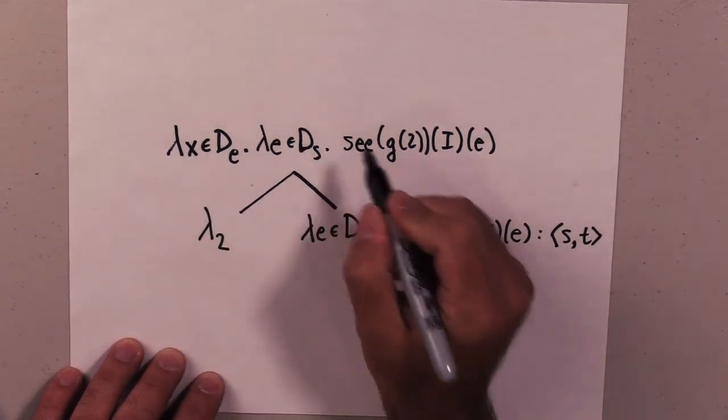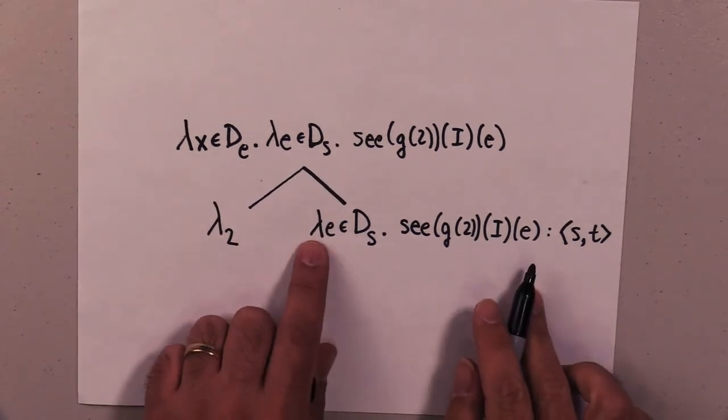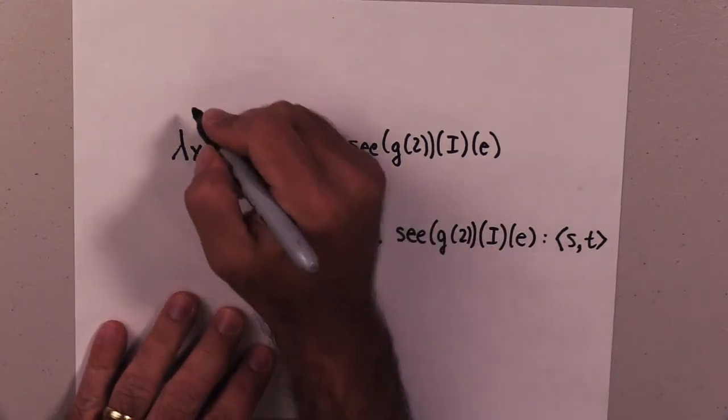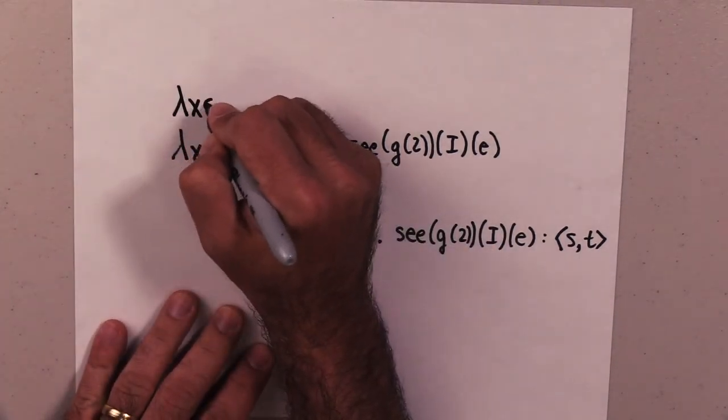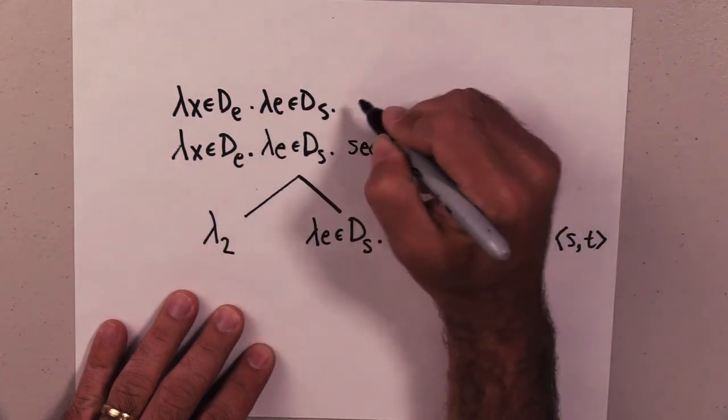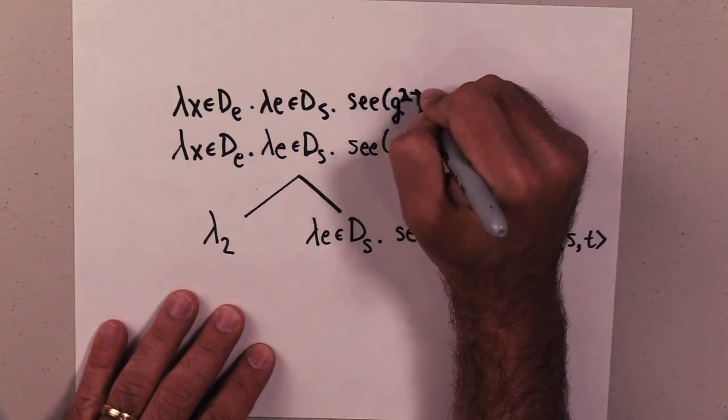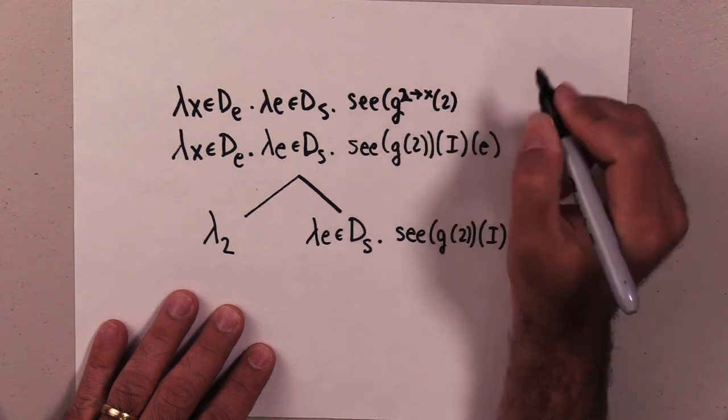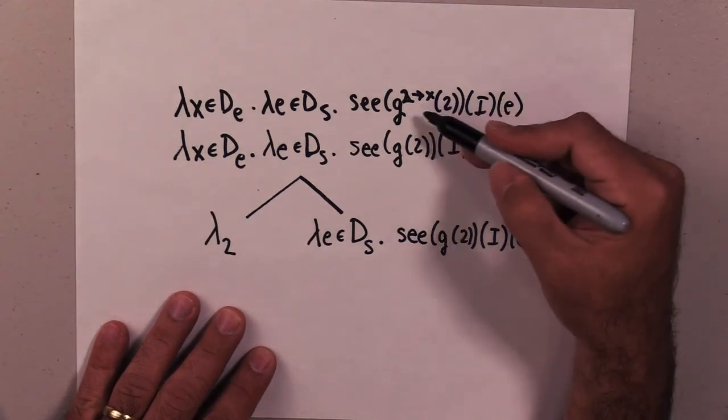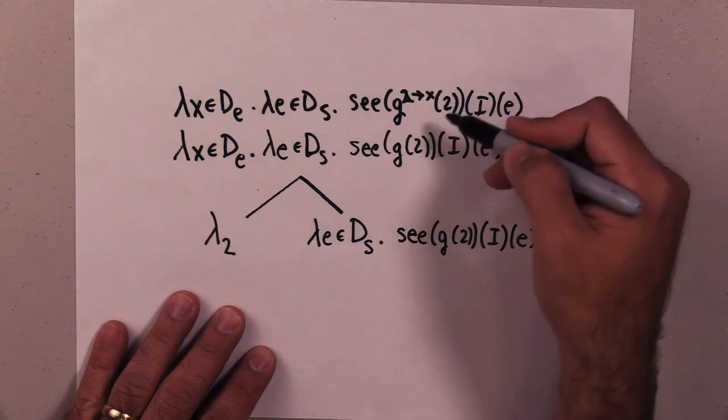And we'll end up just adding it, so we don't lose any arguments here. That's the key bit: you don't want to lose anything you had, we're just adding an argument. Then we modify, so we'll write this again: C G, 2 maps to x of 2, I of e. And since G now maps 2 to x and we're plugging it in, we can replace that with x and we get our result.